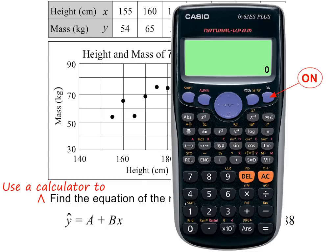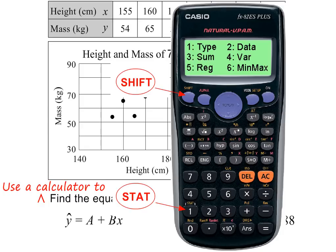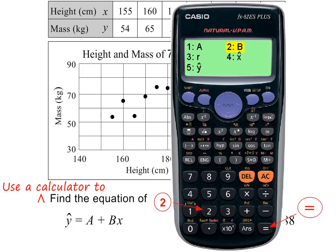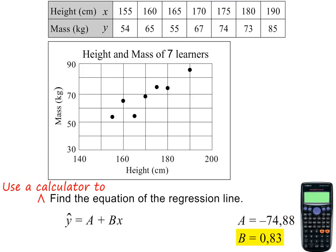To get the value for B, you first need to clear by pressing the on button. We then again press Shift and then Stat, and then 5 for regression. To get the value for B, you need to press 2 and then the equal sign. Correct to two decimal places, the value is 0.83.